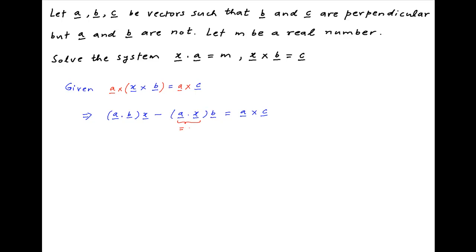Now A dot X is equal to X dot A and this is given to be equal to M. Therefore the above equation can be written as A dot B times the vector X is equal to M times the vector B plus A cross C.